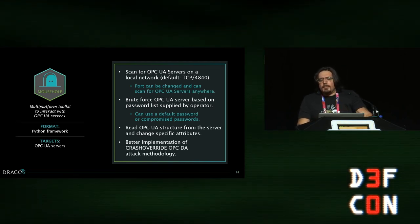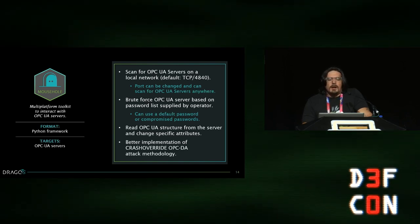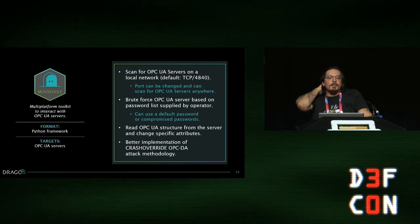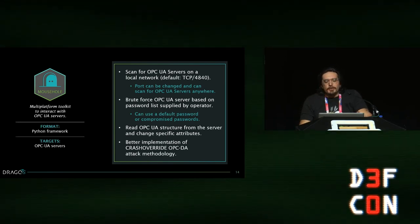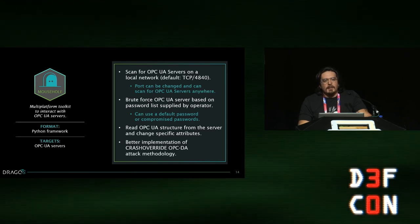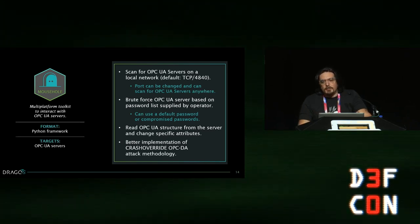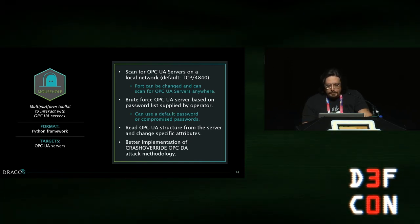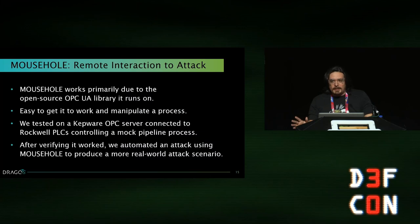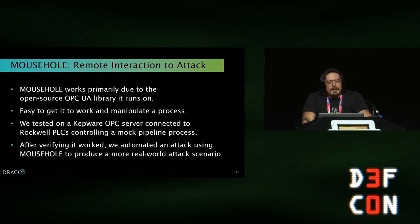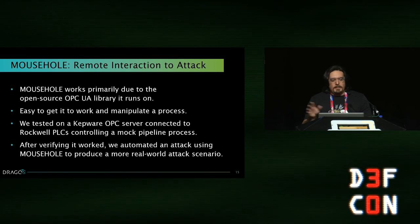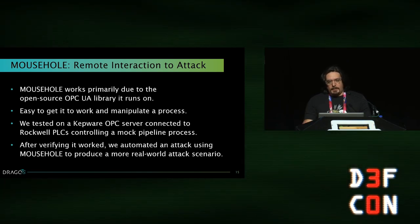In general, this is a better implementation of Crash Override's attack, which used the older OPC DA methodology. OPC DA was based on DCOM, which the OPC Foundation recognized as problematic and replaced with the cross-platform OPC UA. With Mousehole, it just worked — it's based on a well-vetted open source library. It was very easy to get it working and manipulate the process. We had no problems on our pipeline lab.